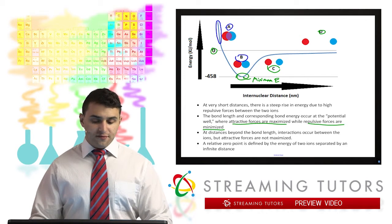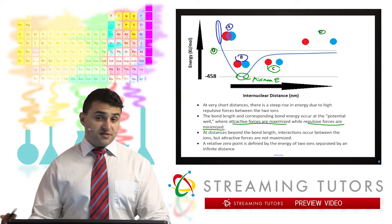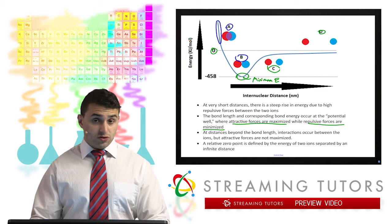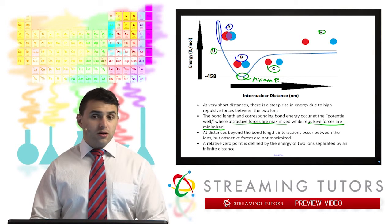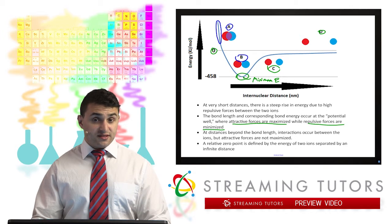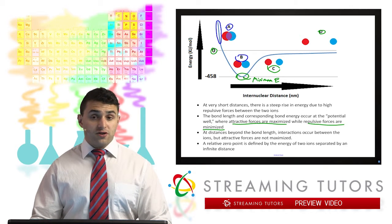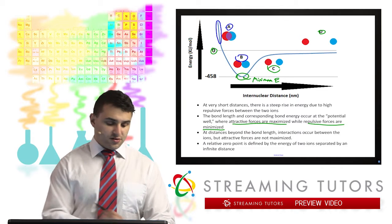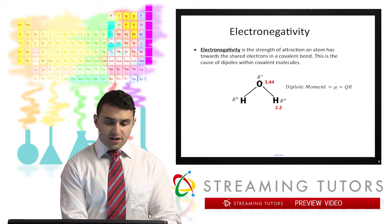So those are the four kinds of different states we can see when we're trying to form a bond. We can have them too close together, too far apart, or just at this perfect distance, this bond length of attractive interactions between the two species. So that's how you can determine a bond length energetically.